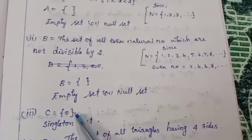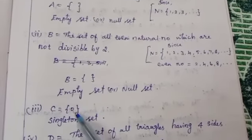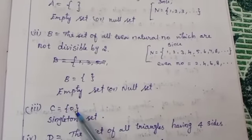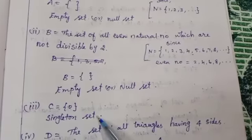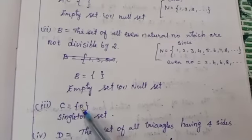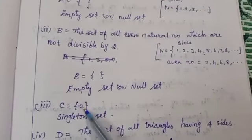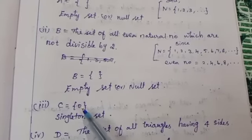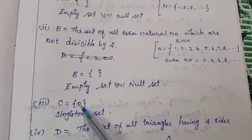C is equal to set of all 0. So we have only one element, 0. So this is a singleton set, not empty set. Here it is a singleton set — we have the element 0. Zero is also one element.